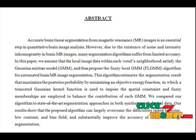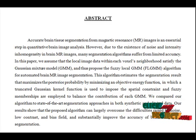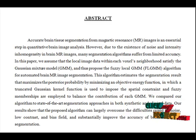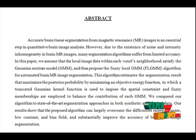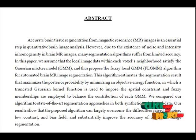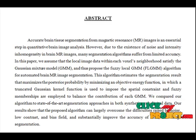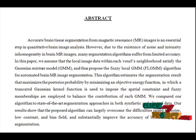In our method, we use both a Fuzzy and Gaussian Mixer Model. This algorithm uses a truncated Gaussian kernel function to impose spatial constraints, and fuzzy memberships are employed to balance the contribution of each GMM. We compared our algorithm to state-of-the-art segmentation approaches in both synthetic and clinical data. Our results show that the proposed algorithm can largely overcome the difficulties of noise, low contrast, and bias field, and substantially improve the accuracy of brain MR image segmentation.